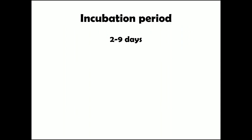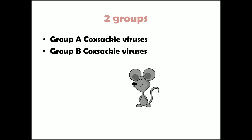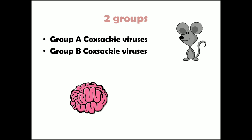The incubation period of Coxsackievirus infections is about two to nine days. There are two main groups: Group A and Group B Coxsackieviruses. Initially, experiments were done in suckling mice — virus particles were injected intracerebrally and the changes were observed. Two outcomes were noted: spastic paralysis and flaccid paralysis, and based on that, the viruses were classified into Group A and Group B.